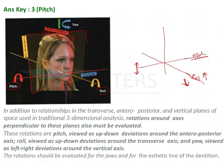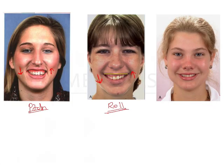The last rotational tendency is yaw, which is seen along the occlusal plane. Yaw refers to side-to-side rotation of the jaw from one side to the other along a vertical axis.